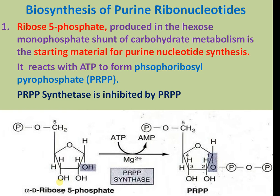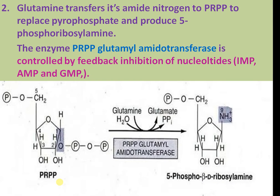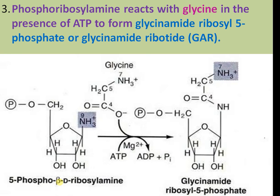In the biosynthesis of purine ribonucleotides, ribose 5-phosphate produced in the hexose monophosphate shunt of carbohydrate metabolism is the starting material. It reacts with ATP to form phosphoribosyl pyrophosphate (PRPP). PRPP synthetase is inhibited by PRPP via feedback. Glutamyl transferase transfers the amide nitrogen to PRPP to replace pyrophosphate and produce 5-phosphoribosylamine. PRPP glutamyl amide transferase is controlled by feedback inhibition from IMP, AMP, and guanosine monophosphate. Phosphoribosylamine reacts with glycine in the presence of ATP to form glycinamide ribosyl 5-phosphate.